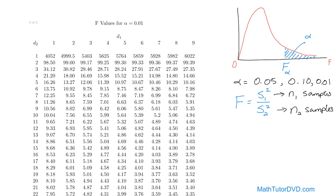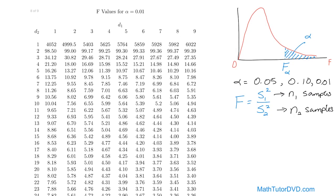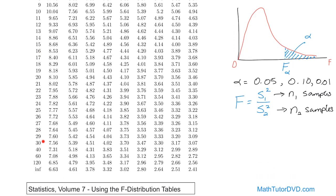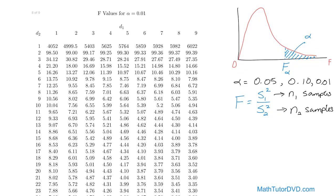Here's what a typical F distribution table looks like. The exact formatting varies by textbook, but this first one is for alpha 0.01. Numbers run across the top and down the side. Every value you pull from this table gives you an area to the right — a level of significance — of 0.01. If your problem has alpha 0.05, you would not use this chart at all; you'd need a different one. So you must read the label at the very top of the chart first.